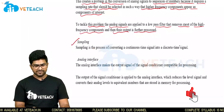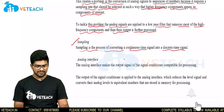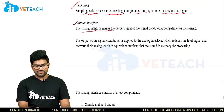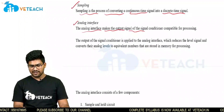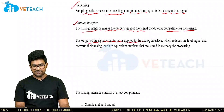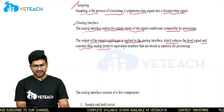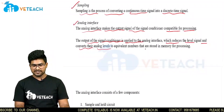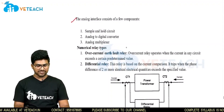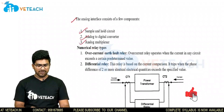Coming to the next component: sampling. Sampling is the process of converting a continuous time signal into a discrete time signal. Next is analog interface. The analog interface makes the output signal of the signal conditioner compatible for processing. The output of the signal conditioner is applied to the analog interface, which reduces the level of the signal and converts analog levels to equivalent numbers stored in memory for processing. The analog interface consists of a few components: sample and hold circuit, analog to digital converter, and analog multiplexer.